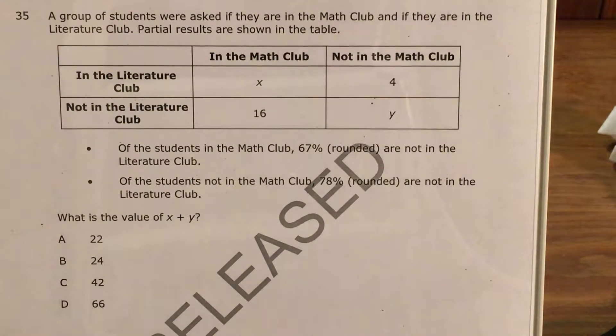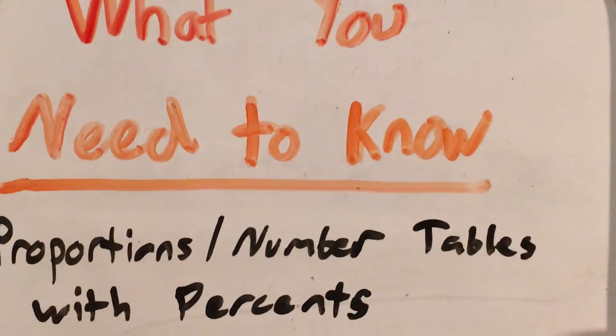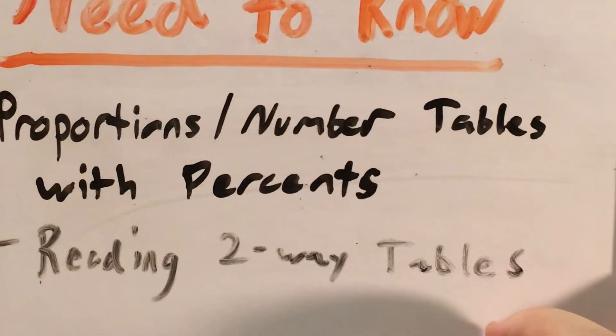So in order to do a question like this, we're going to have to know two skills: proportions and number tables using percents, and also how to read a word problem that involves one of these two-way tables.